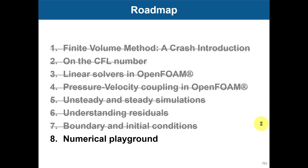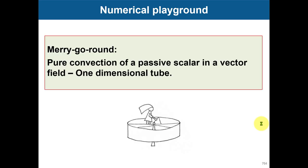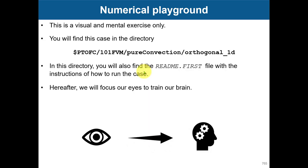Welcome to the tutorial, the numerical playground of Model 6. We're going to work out four cases, and I hope to cover all the numerics we have seen. You'll get a better idea of what is going on in fvSchemes, fvSolution, and controlDict. The first case is a pure convection case — a one-dimensional geometry where we know there's an analytical solution, but we're going to put into practice all the numerical schemes for the discretization of the convective term.